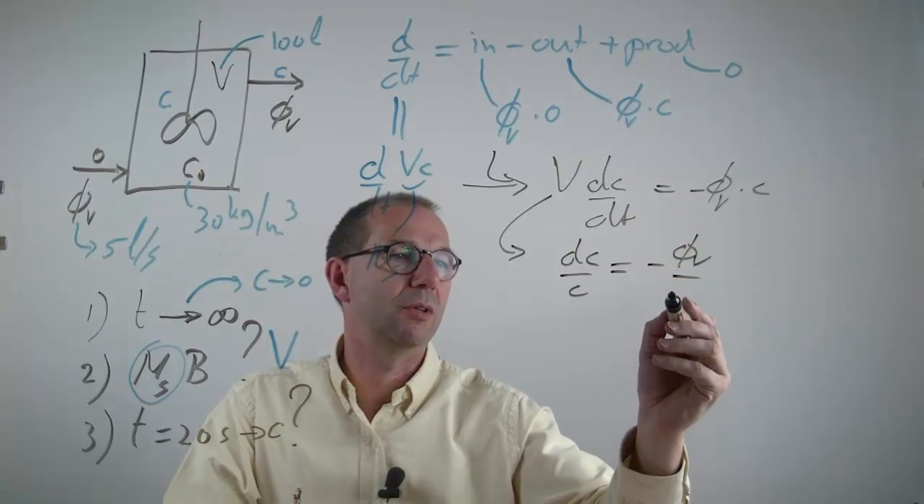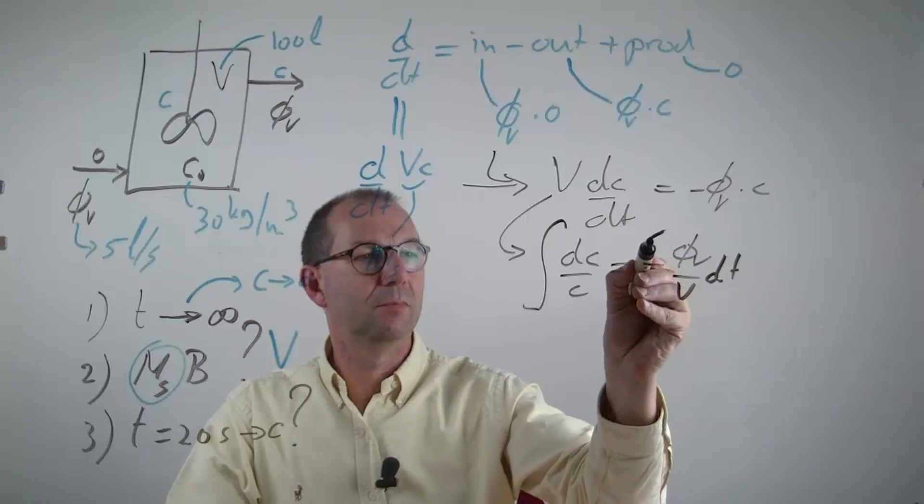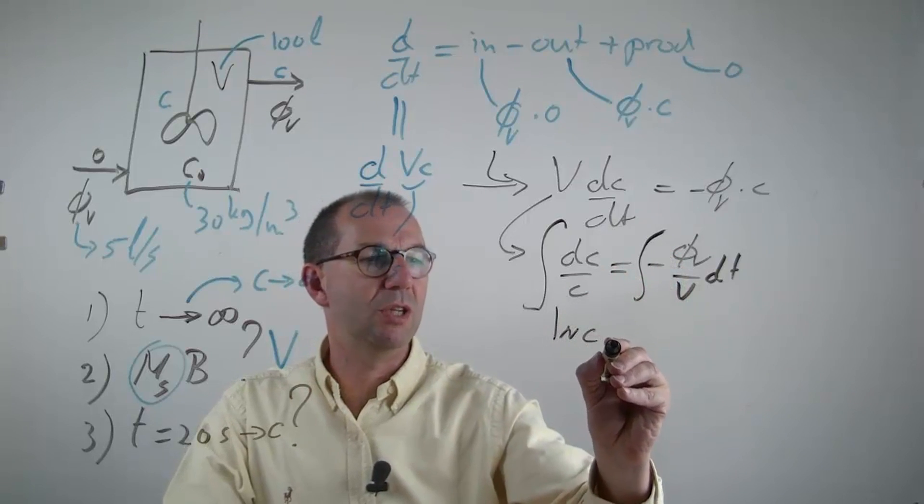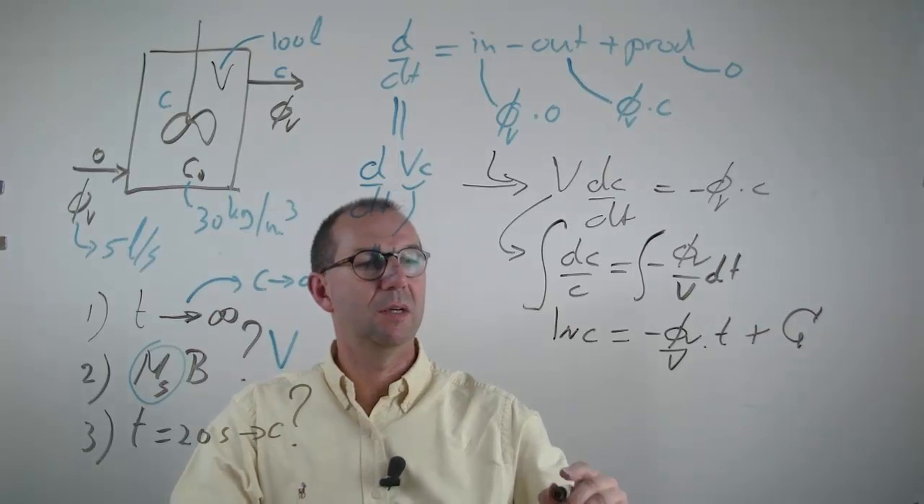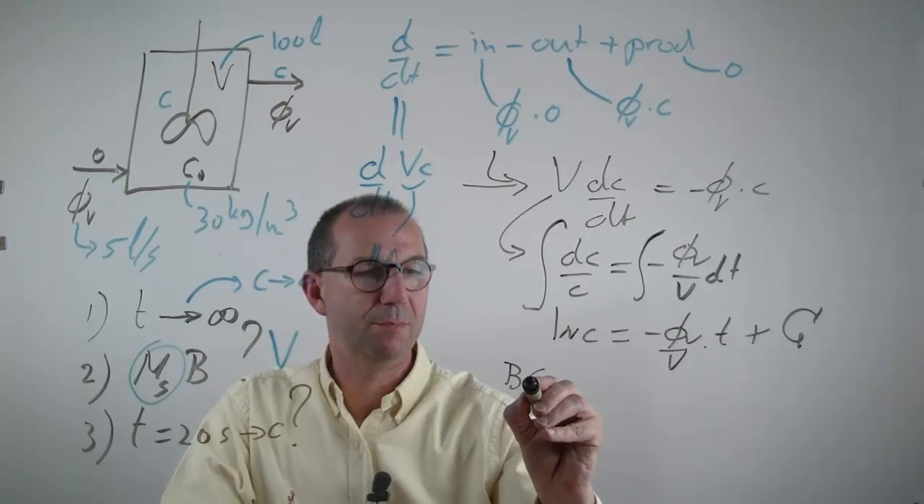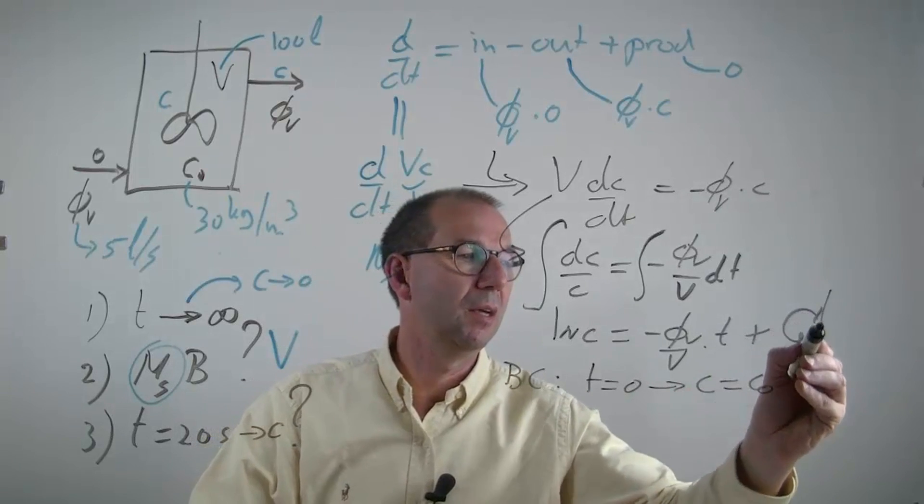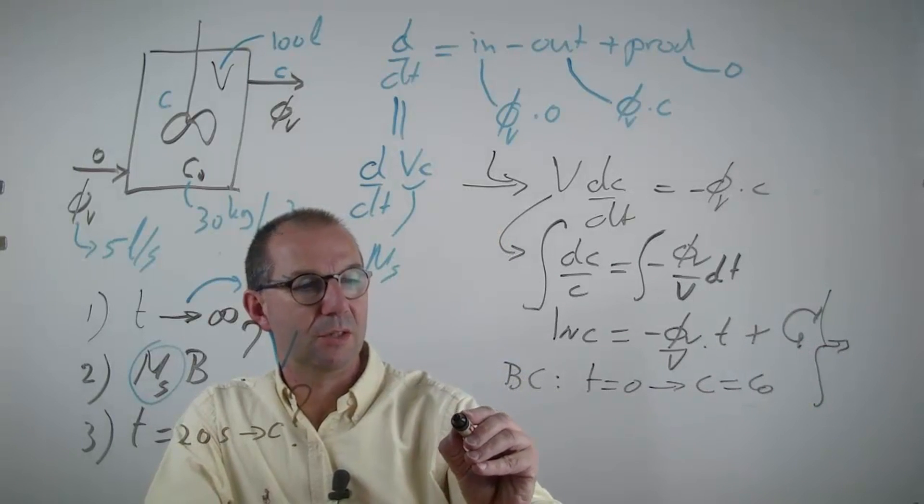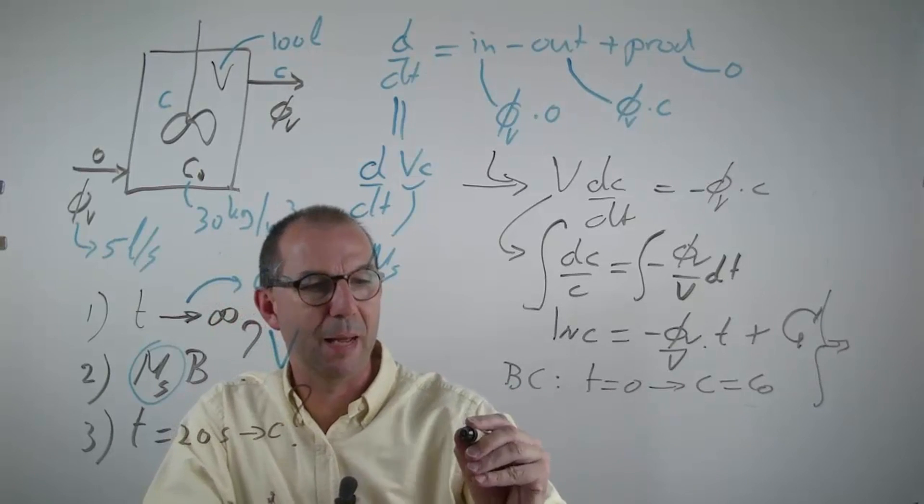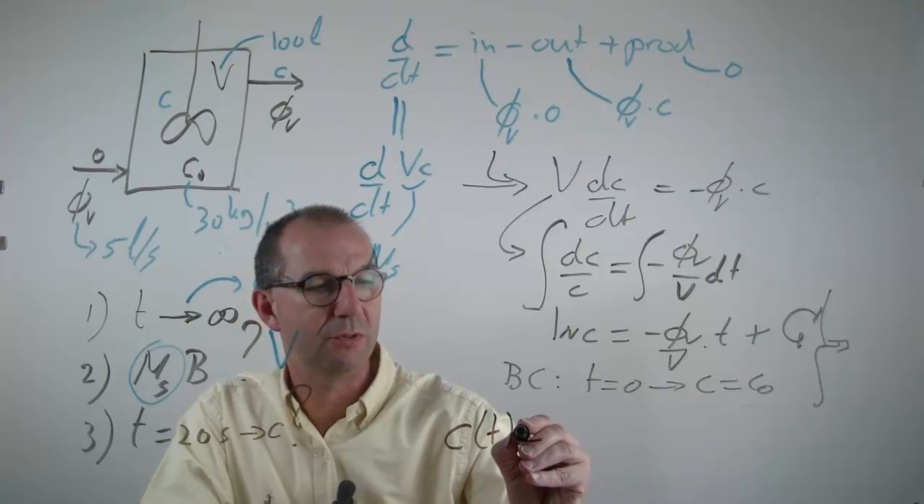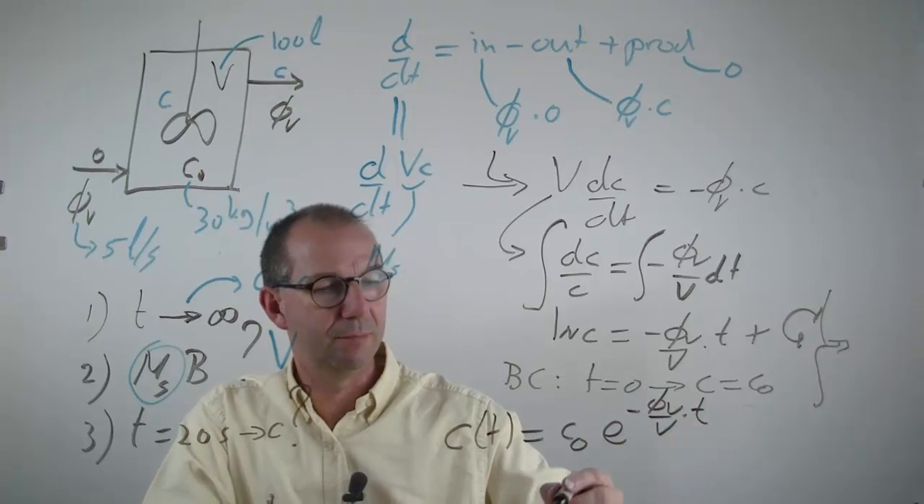So everything with the unknown concentration is on this side. Everything else goes to the other side. I can integrate these both. This gives me the logarithm of C and this gives me a linear relation in T, and I should not forget to add an integration constant. That integration constant is always found from boundary conditions and I have one at t equals zero. The concentration C was a known C0, 30 kg per cube. If I fill that in, I get that C over C0 is exponent. I'm going to back out explicitly C. The concentration as function of T equals C0 exponent minus V over V times T.